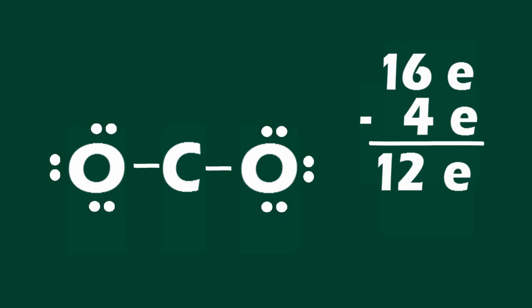There are now 12 valence electrons to distribute around the structure. With only 12 electrons remaining, there are only enough electrons to satisfy the octet for the oxygen atoms. According to this structure, carbon does not have a full octet.